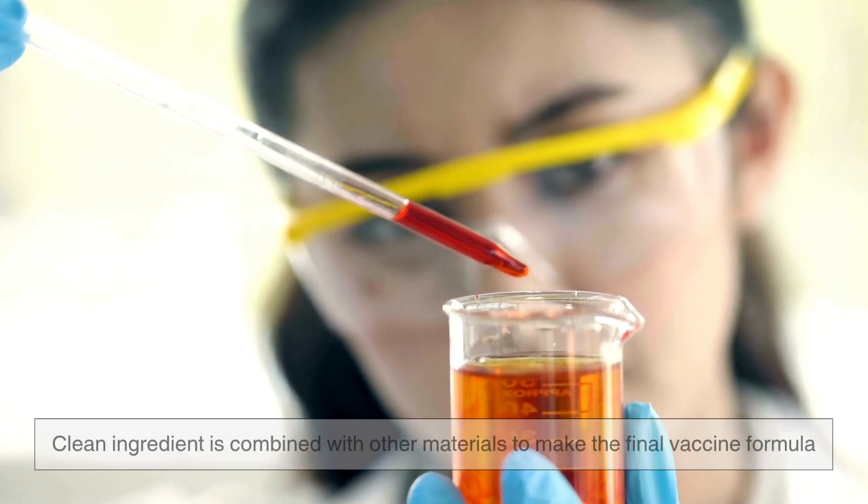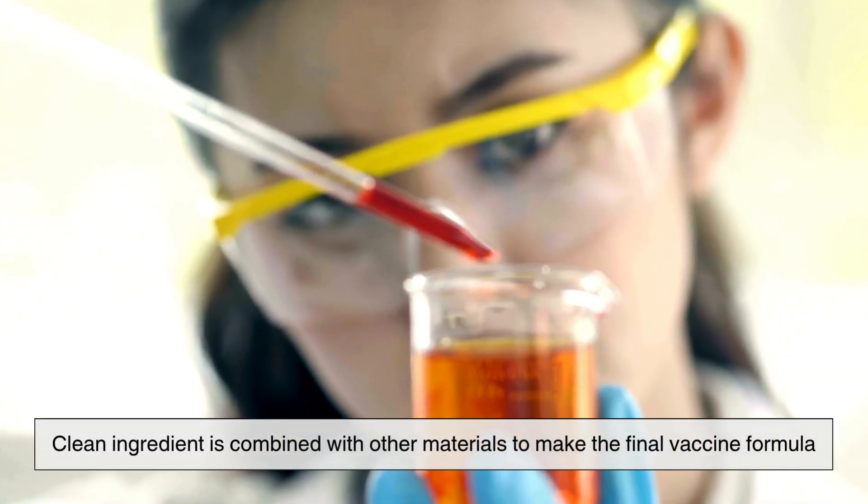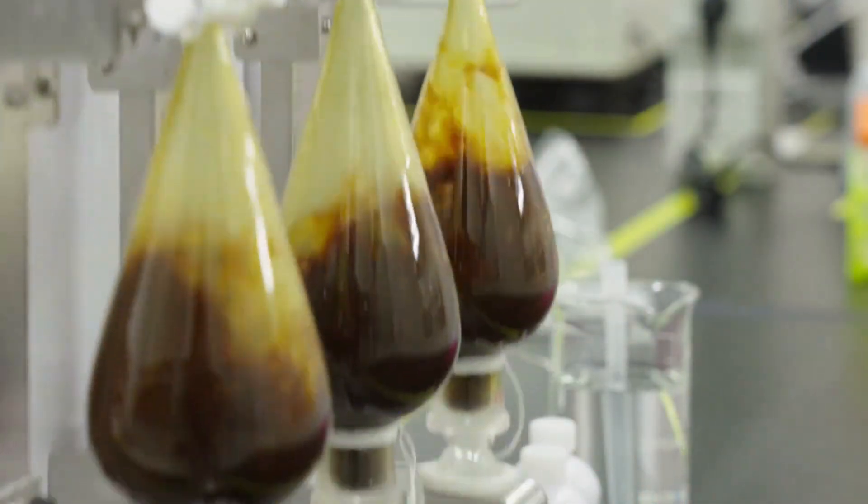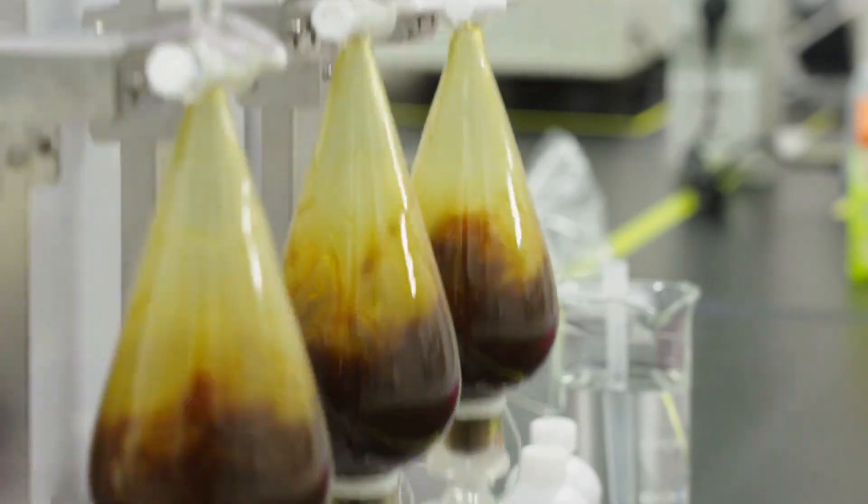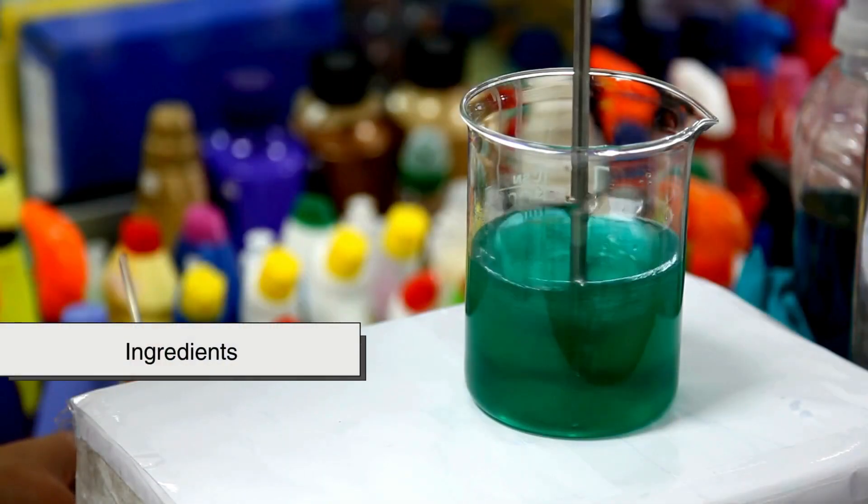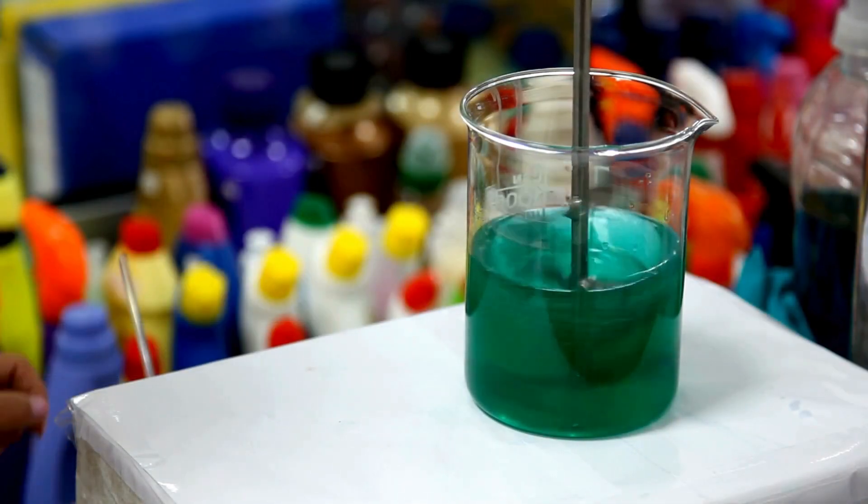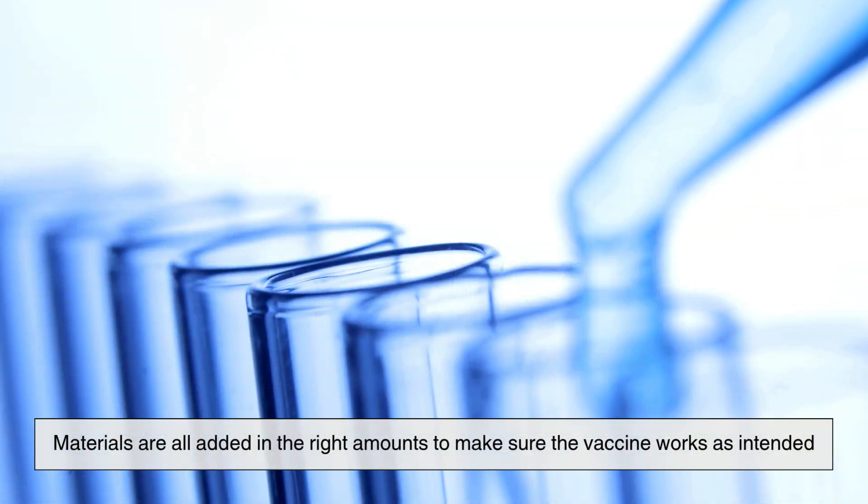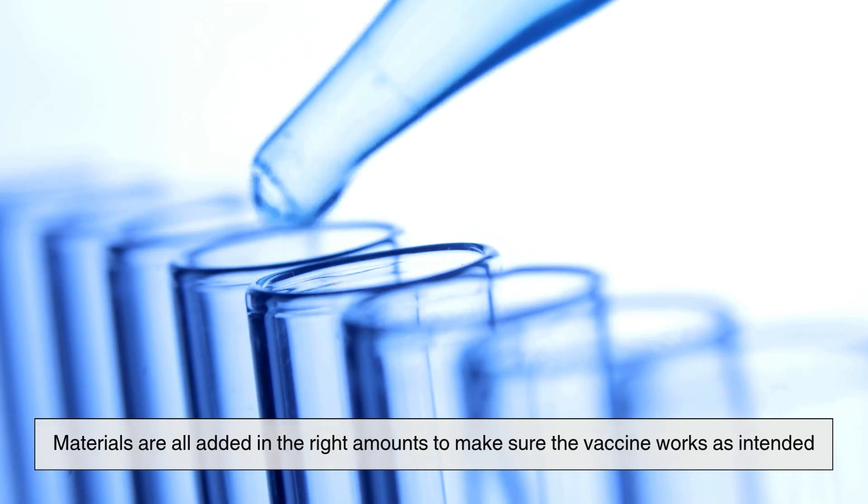After purification, the clean ingredient is combined with other materials to make the final vaccine formula. This includes substances that help the vaccine stay stable, ingredients that help the body respond more strongly, and liquids that help control the dose. These materials are all added in the right amounts to make sure the vaccine works as intended.